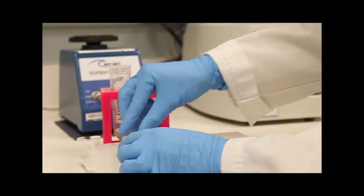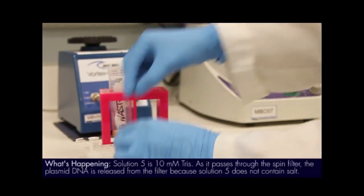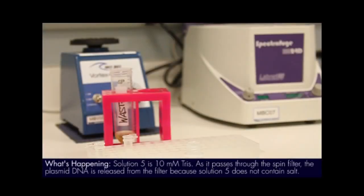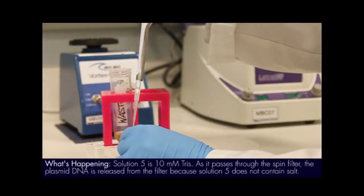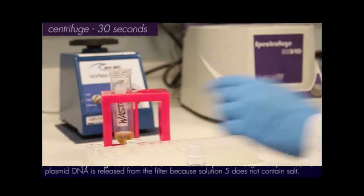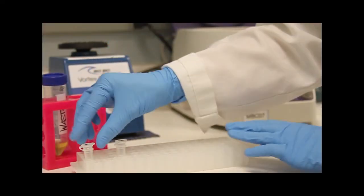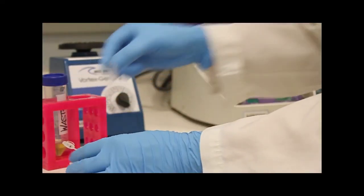We are now ready to elute the plasmid DNA. Be careful not to splash liquid on the filter basket. Place the spin filter basket in a new 2 mil collection tube, add solution 5 or sterile water directly in the middle of the white spin filter membrane and centrifuge at 10,000 times G for 30 seconds. You may now discard the spin filter basket.